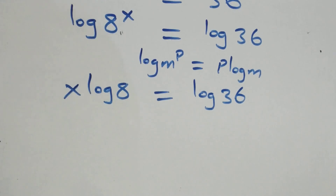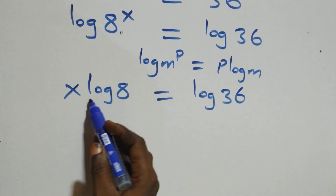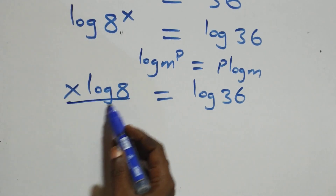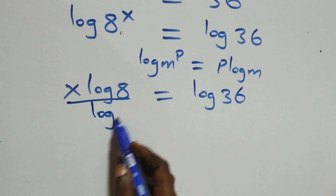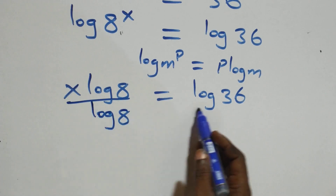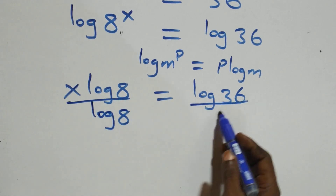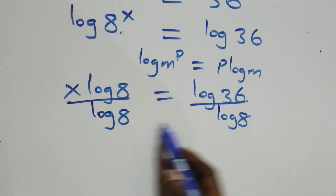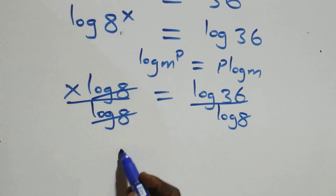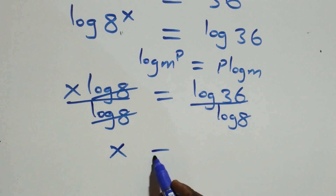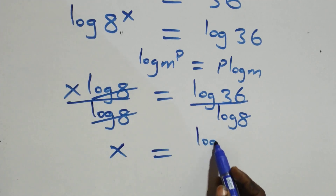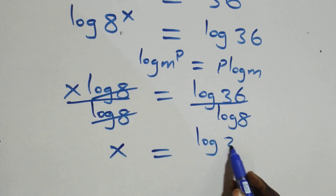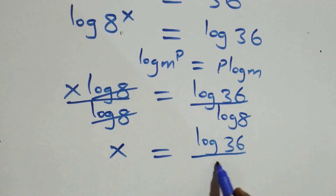The next step, we divide both sides by log 8. The log 8 terms cancel each other, and we have x left, which is equal to log 36 over log 8.